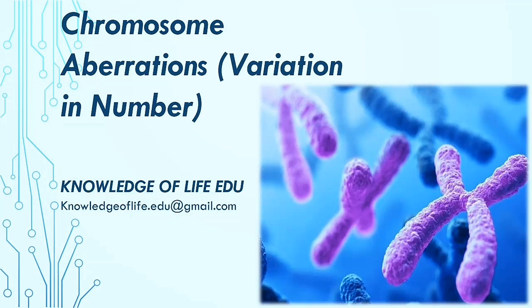Hello everyone, welcome to another video of Knowledge of Life. Today in this video we will discuss about chromosome aberrations. Aberration can be of various types: it can be variation in the number of chromosomes, or there can be variation in the structure of the chromosome. Today we will mainly discuss about the variation in number of chromosomes.